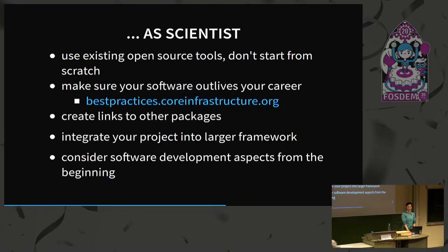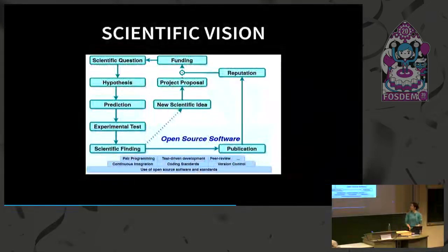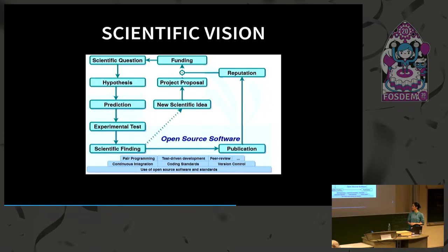As a summary and vision for the future: it would be awesome if the whole scientific cycle from prediction to publication involved more of the open source aspect of software development, including nice features from agile development like pair programming, test-driven development, and peer review. It should build on the large stack of open source software already available, and open source software should be considered in project proposals and funding, and should make a bigger part of a scientist's reputation. Thank you for your attention.